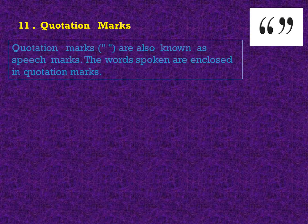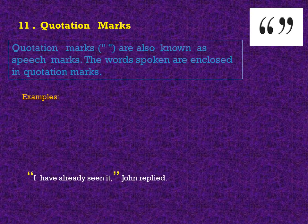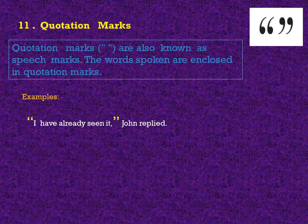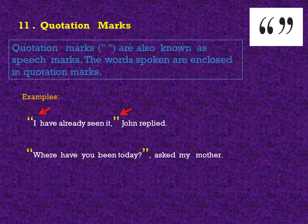Quotation marks. Quotation marks are also known as speech marks. The words spoken are enclosed in quotation marks. For example: open quotation mark — I have already seen it — closing quotation mark, John replied. I have already seen it are the words spoken by John. Another example: open quotation mark — Where have you been today? — closing quotation mark, asked my mother.